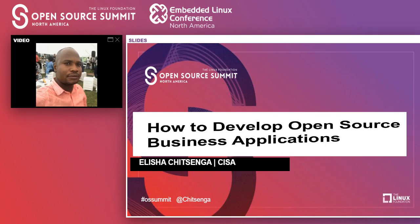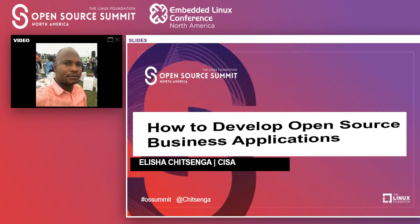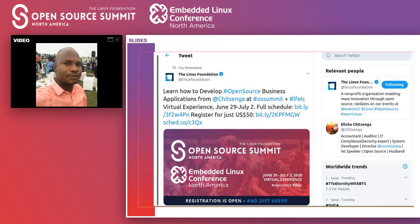Good evening to you all. My name is Elisha Pitsenga from Zimbabwe, Africa. I'm here to present my presentation on how to develop open source business applications. This is my second presentation after the France one in 2019 at Open Source Summit, and this is the tweet from the Linux Foundation promoting my talk.